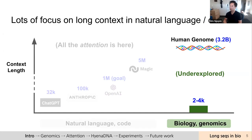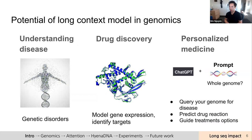We thought maybe we could apply some of our models to this domain and have an outsized impact. We're particularly driven by the potential impact: not just making cool models, but if we can have more expressive long context models, we can potentially help with understanding disease, drug discovery, or target discovery. This concept of personalized medicine intrigues us — imagine something like ChatGPT that could fit an entire human genome in its prompt. You could query that genome for potential diseases, predict drug reactions, and guide treatment options based on someone's specific genetic code.